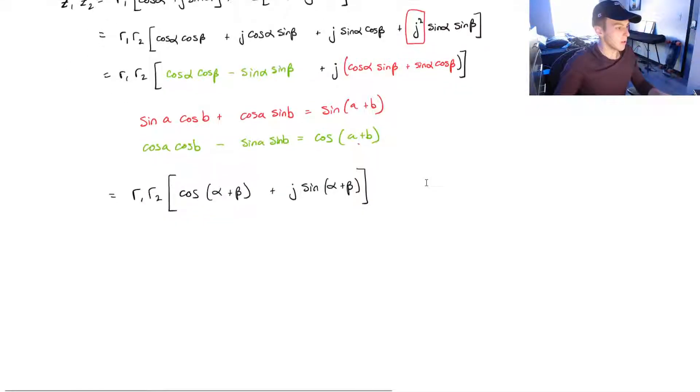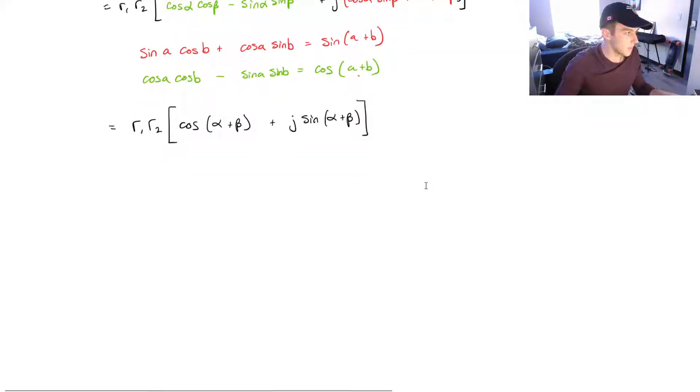And what we learned from this, we learned two things. Number one, when we multiply our two complex numbers together, and now we've got the modulus of those two numbers. Those will be multiplied together.